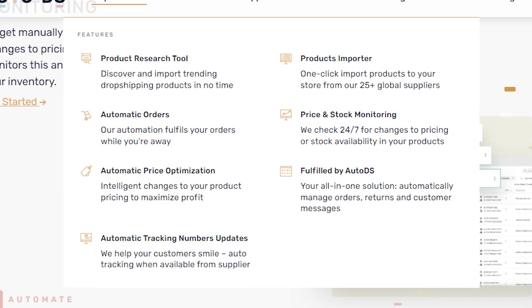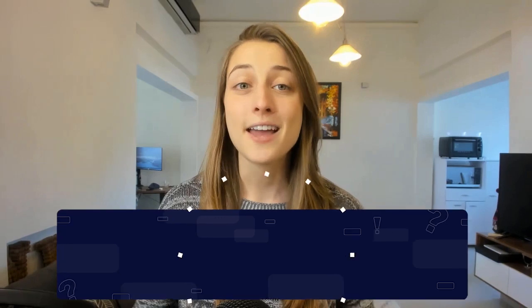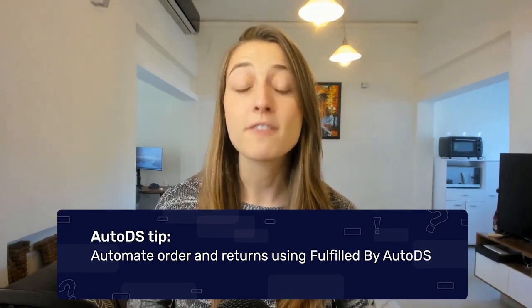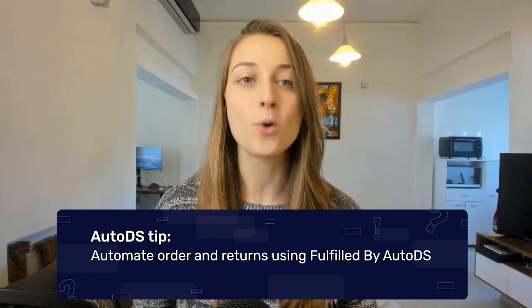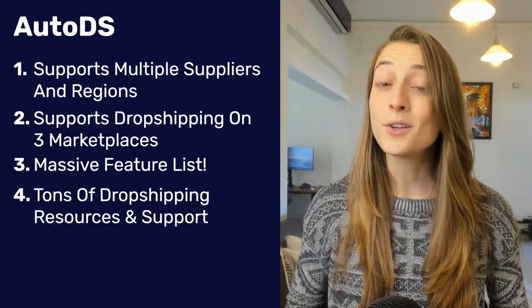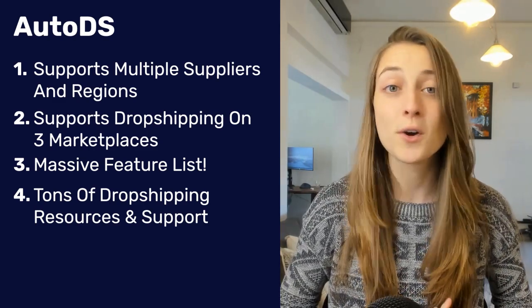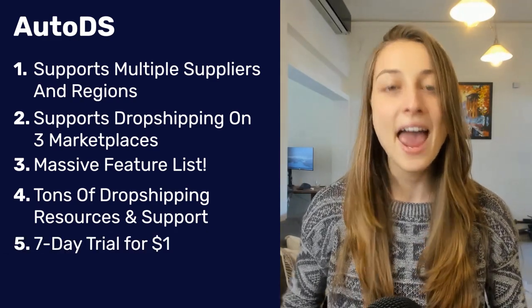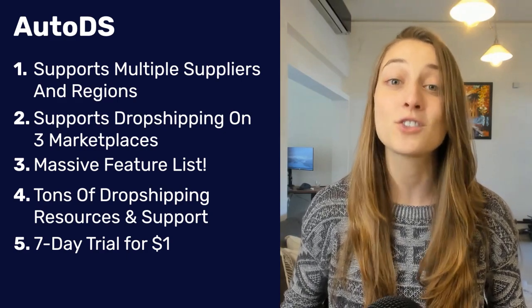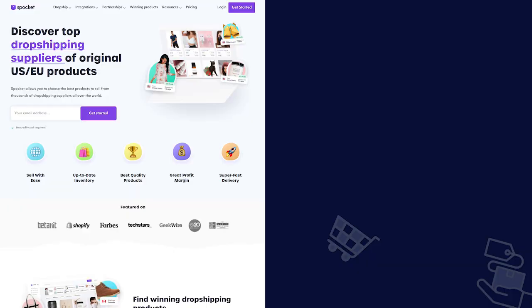Something cool is that you can automate orders and returns using Fulfilled by AutoDS, meaning it's AutoDS's account and you don't have to risk your own personal buyer account. Plus you'll get plenty of drop shipping support — blogs, video tutorials, courses, mentors, and much more. Anyone can try a seven-day trial option and start for just one dollar.